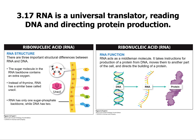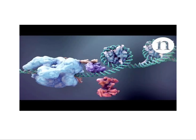RNA is a universal translator that reads DNA and directs protein production. The central dogma: DNA goes to RNA — a single-stranded ribonucleic acid, not deoxyribonucleic — and then RNA is read by a ribosome to create protein. An enzyme makes the RNA from the DNA, and then the ribosome reads the RNA to make the protein. I'll show videos about how that machine works.